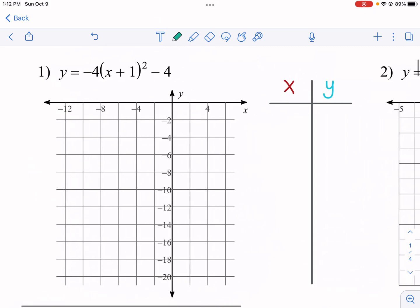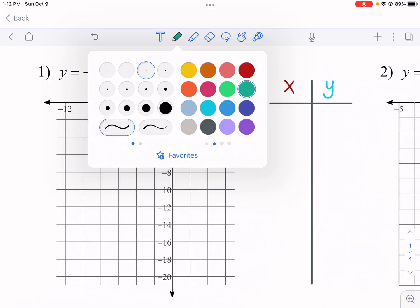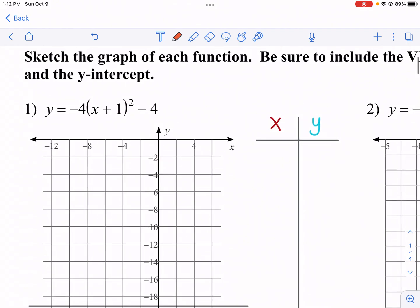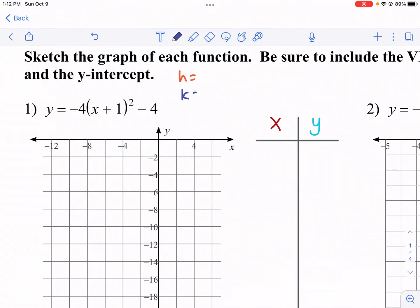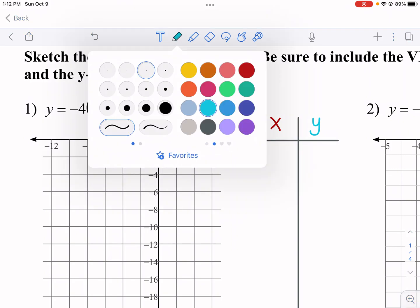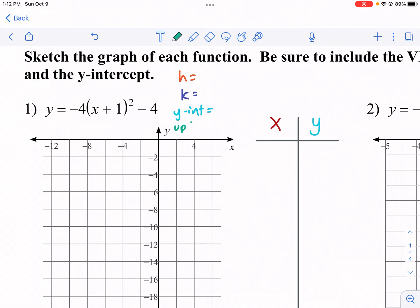So number one, first thing we're always going to want to identify is let's identify some key pieces of information. And I'm going to probably just copy and paste this and save this. So we want our h, we want our k, we want our y-intercept. We want to know if it opens up or down. So let's make that up or down, up slash down.